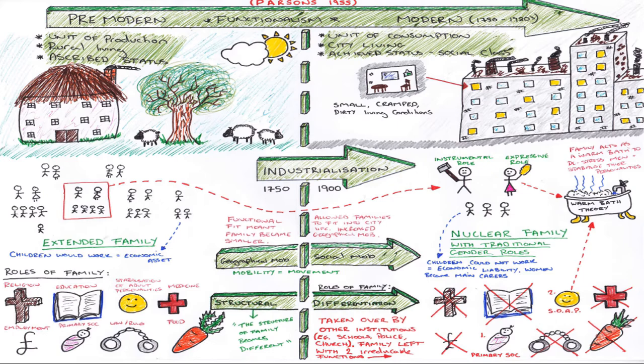Parsons' work is predominantly theory-based. He's what we call an armchair sociologist. A lot of what he has to say, he comes up with ideas and might have some circumstantial evidence to support them, but in reality none of this is proven. What I've tried to summarize on this one graphic is all the elements of his theory and how they relate to one another.